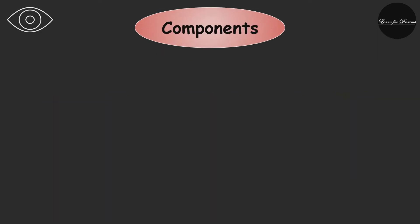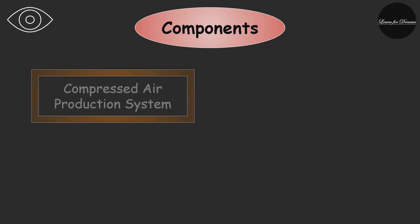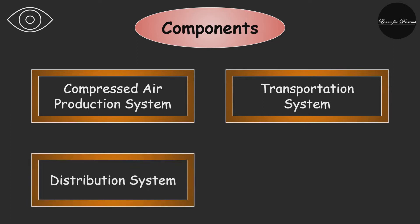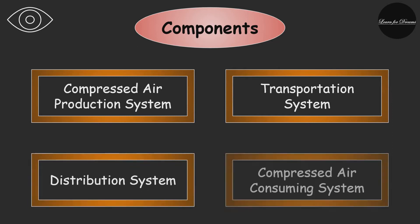Now let's see the components of a pneumatic system. There are four basic components: compressed air production system, transportation system, distribution system, and compressed air consuming system.